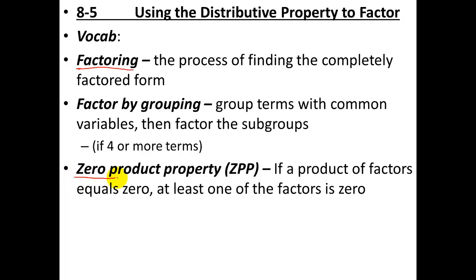The last vocab here is zero product property. Shortcut we're going to call it is the ZPP. And this one's really important. It says if a product of factors equals zero, at least one of the factors is zero. So if we have a times b times c equals zero, then we know a equals zero is one possibility, b equals zero is one possibility, and c equals zero is one possibility.